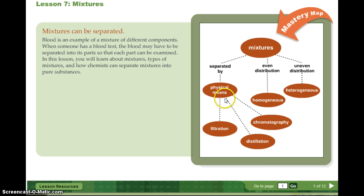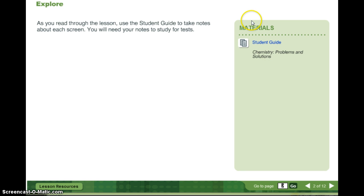So mixtures can be separated by physical means. Examples are filtration, distillation, and chromatography. Mixtures that have even distribution are homogenous. Mixtures that have uneven distribution, or think of like layers, are called heterogeneous. And you can click for the study guide, download that.